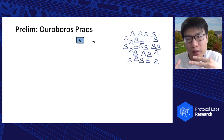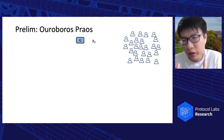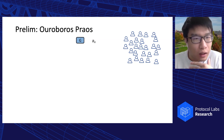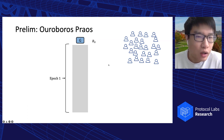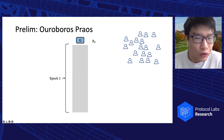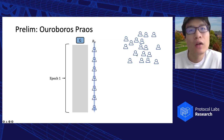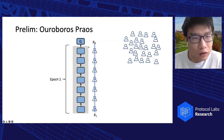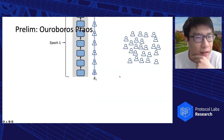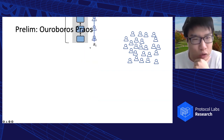Before moving into the details of Minotaur, let me briefly describe the underlying PoS long-chain protocol. Take Ouroboros-Praos as an example. Time is divided into fixed-length epochs. In each epoch, we have a randomness used to perform the PoS lottery, selecting a group of block proposers from the pool of stakeholders. In the first epoch, the randomness R0 is hard-coded in the genesis block. At the beginning of the second epoch, we calculate a new randomness R1 as a function of the block hashes in epoch 0. This process repeats for subsequent epochs.